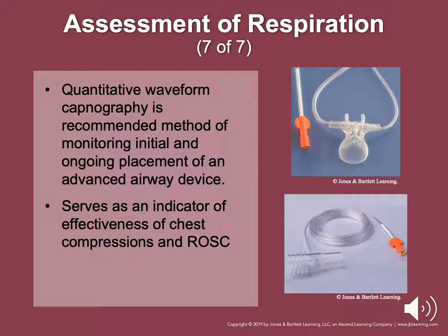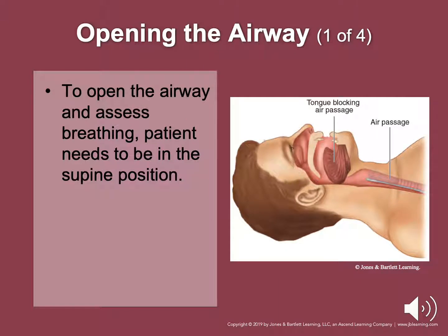To open the airway and assist breathing, the patient needs to be in a supine position. The head-tilt chin-lift maneuver is for patients who have not sustained trauma. This is sometimes necessary when the tongue or something else is causing obstruction. To perform: place the patient in supine position, place one hand on the patient's forehead and apply firm backward pressure with the palm to tilt the head back, then place the bony part of the other hand under the patient's chin, lift the chin up bringing the entire jaw with it, and help tilt the head back. Lift so the teeth are nearly brought together but avoid closing the mouth completely.